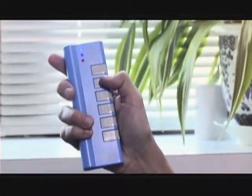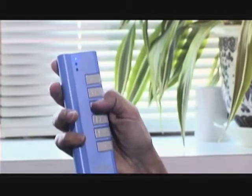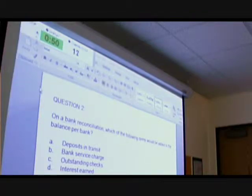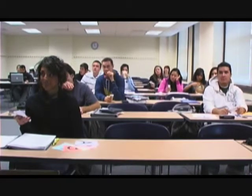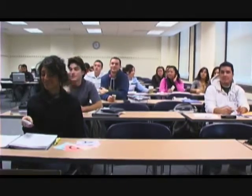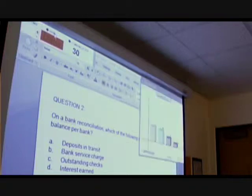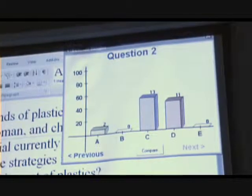As the instructor, you have a clicker that you've registered as the instructor in the class. You click A and the question comes up for a minute and students have that time to weigh in their responses — usually you can put five options, or you can just do a true/false with A and B. Then you click it again to stop it, click B, and a bar graph immediately pops up on the PowerPoint to show you the responses of the students.